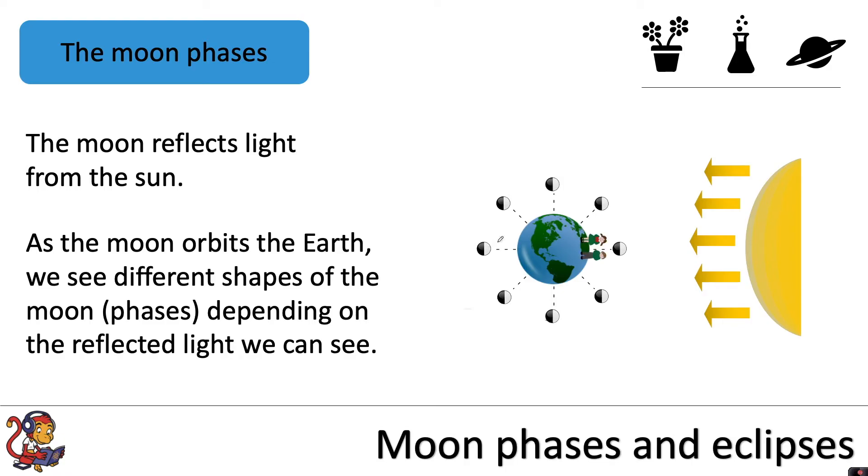So for example if we were looking at this Moon here you can see it's receiving lots of light from the Sun and reflecting that back down to Earth. So this is the shape of the Moon that we would see.